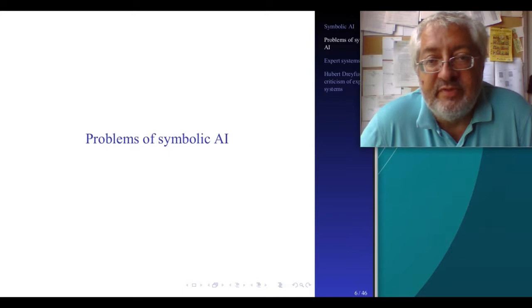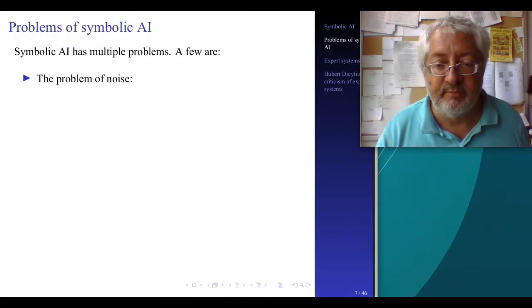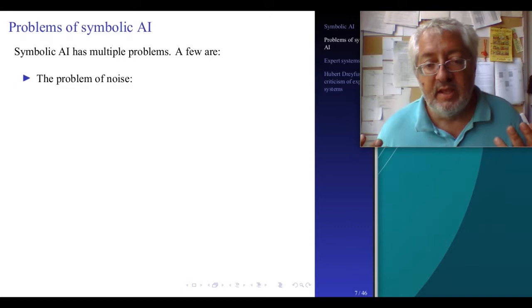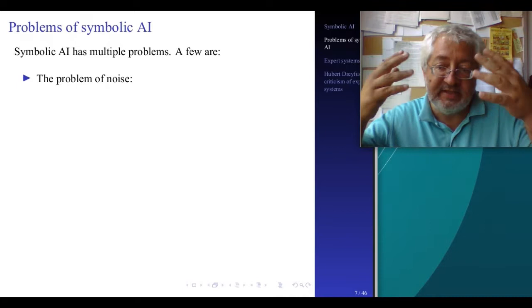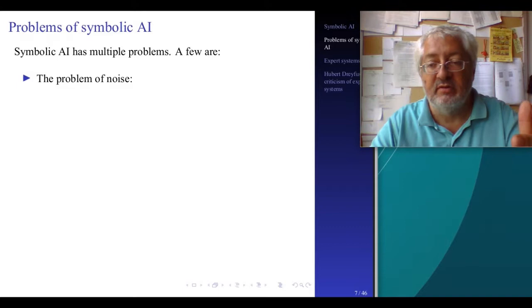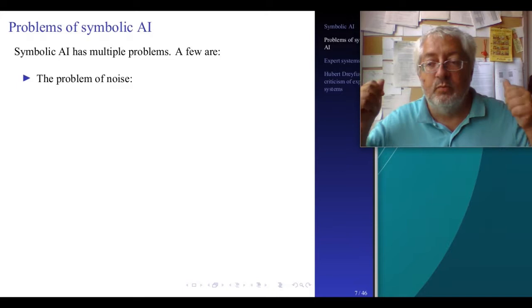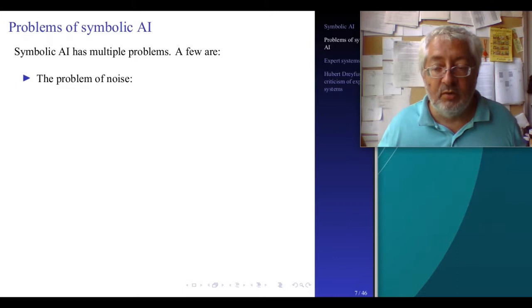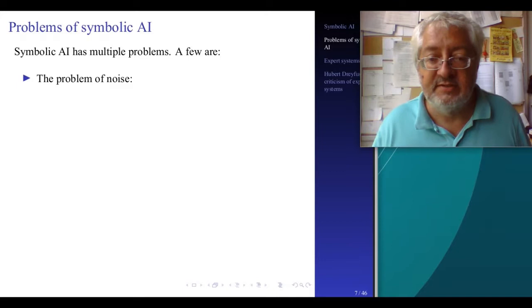What are some of the problems of symbolic AI? Before going to Dreyfus's criticism, let's talk about some more general problems. One is the problem of noise. In every communication channel — like when I talk to you, or when you look at me in this video — you have signal, which is what you want to receive, perhaps the image of my face or these slides, and you have noise, which is the background of the picture or the sound of the air conditioner.